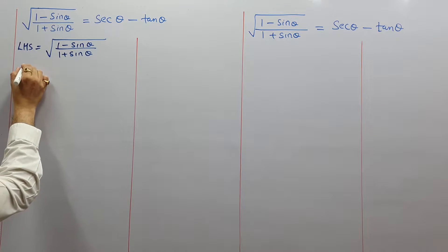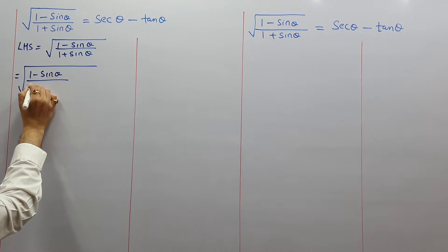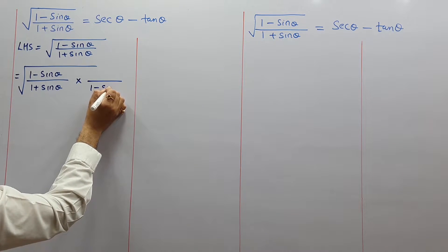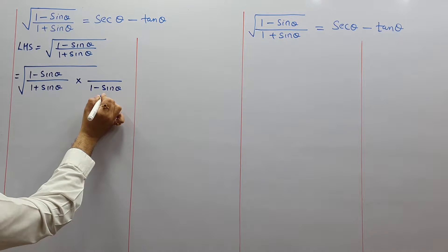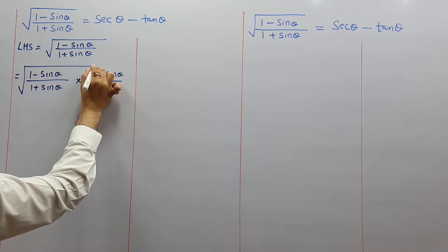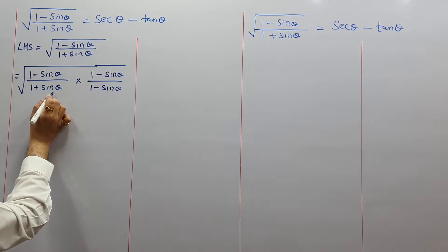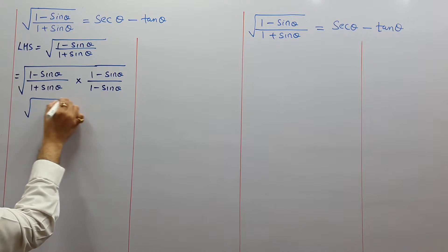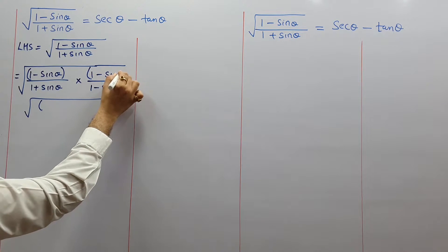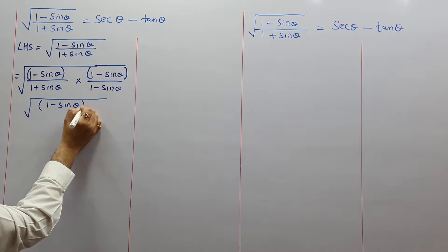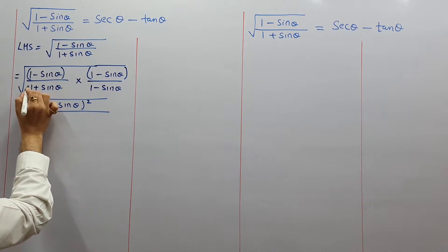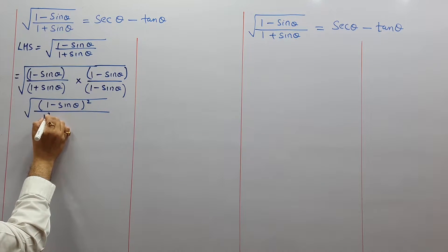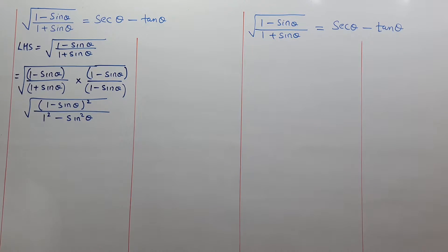Starting our LHS: √((1 - sinθ)/(1 + sinθ)). We multiply by the conjugate of 1 + sinθ, which is 1 - sinθ — whatever we multiply in the denominator, the same goes in the numerator. In the numerator we get (1 - sinθ)(1 - sinθ) = (1 - sinθ)². In the denominator we get (1 + sinθ)(1 - sinθ), which by the identity a²- b² gives 1² - sin²θ.